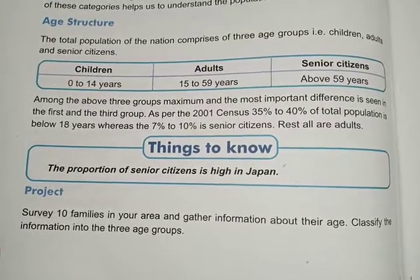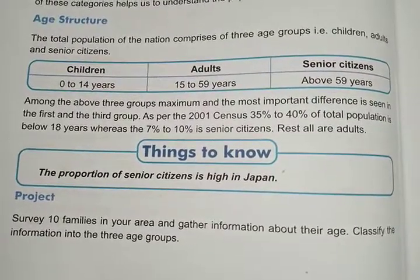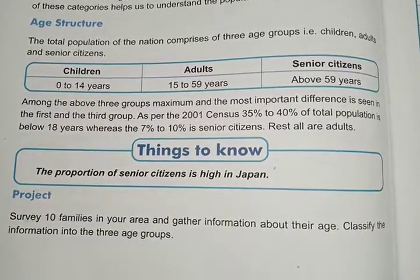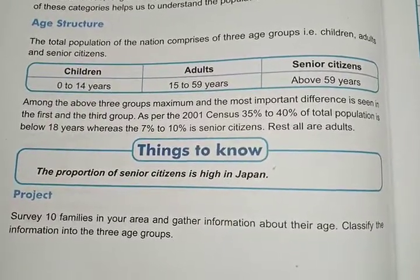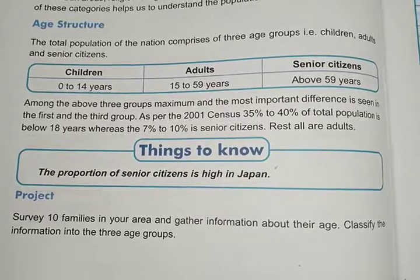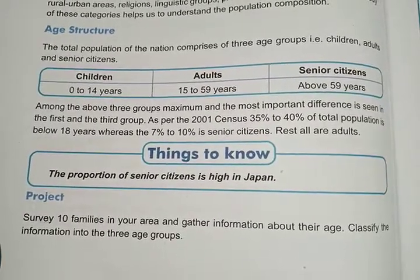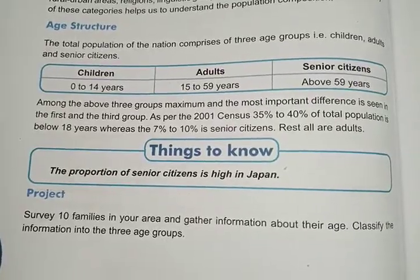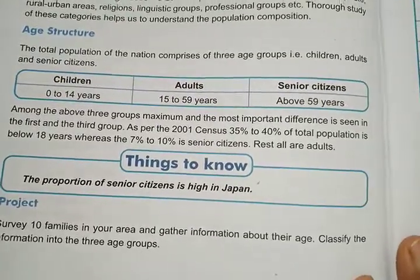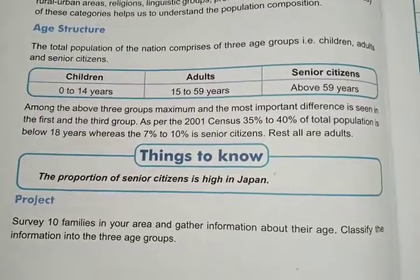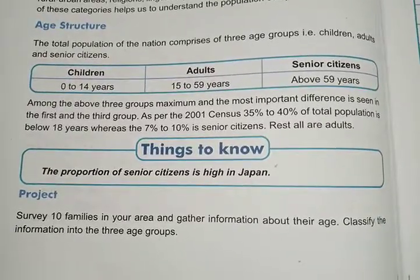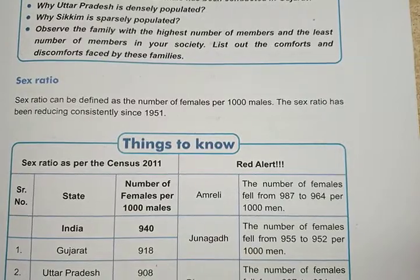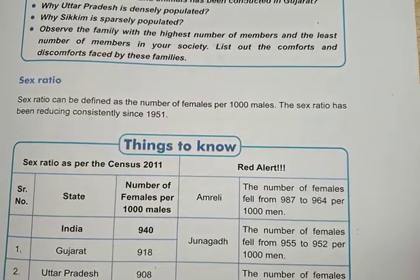The proportion of senior citizens is high in Japan, whereas in our country India, the majority is adults. A project is given to survey 10 families in your area and gather information about their age, classified into three age groups, but it is not necessary to do it now. Area-wise, our country India stands seventh in the world.